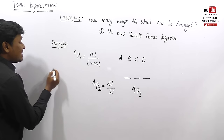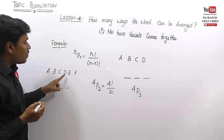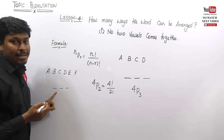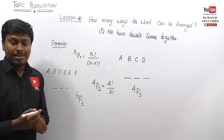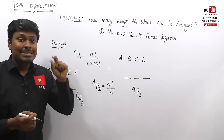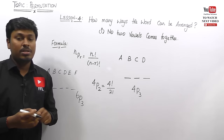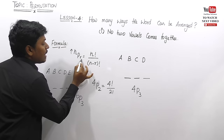Next example: there are six letters — A, B, C, D, E, F — and only three places. How many ways can these six letters be placed in three places? The answer is 6P3, which equals 6 factorial divided by (6 minus 3) factorial, giving 6 factorial divided by 3 factorial. Similarly, if there are four places, the answer is 6P4, which is 6 factorial divided by (6 minus 4) factorial, i.e., 2 factorial.